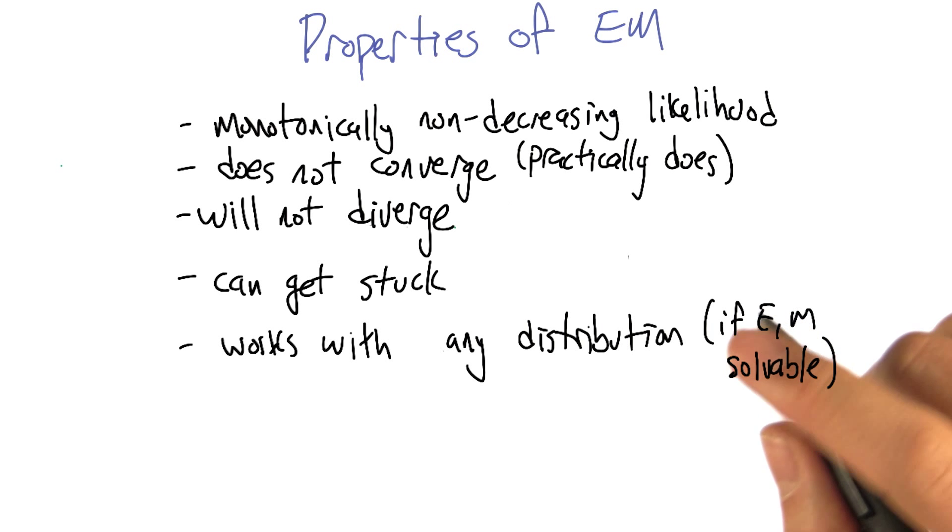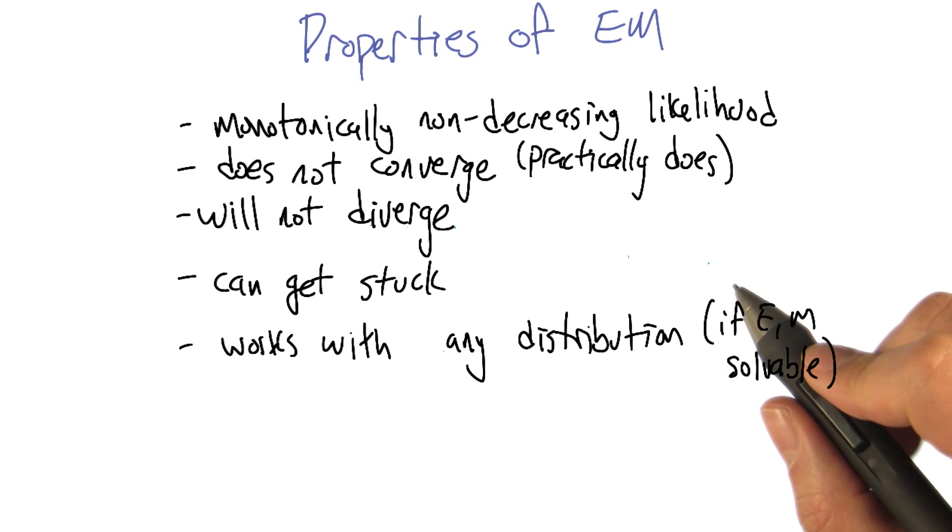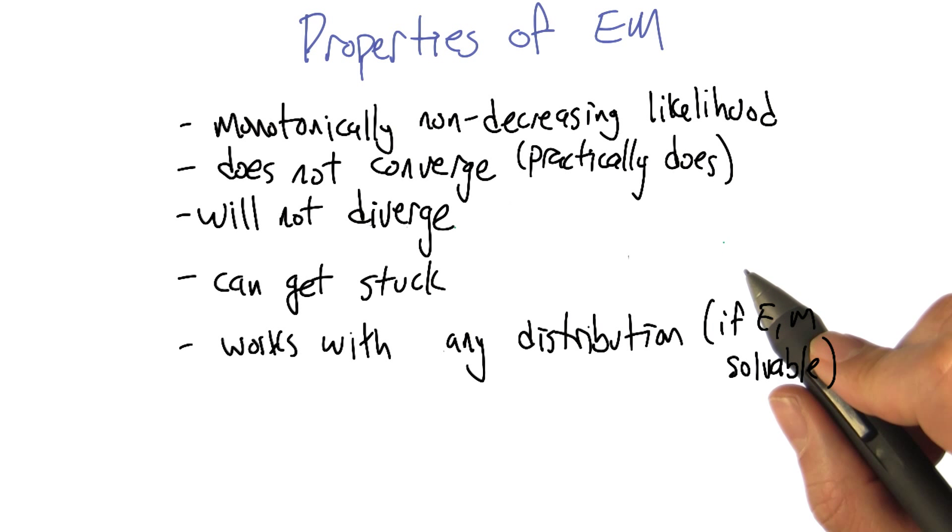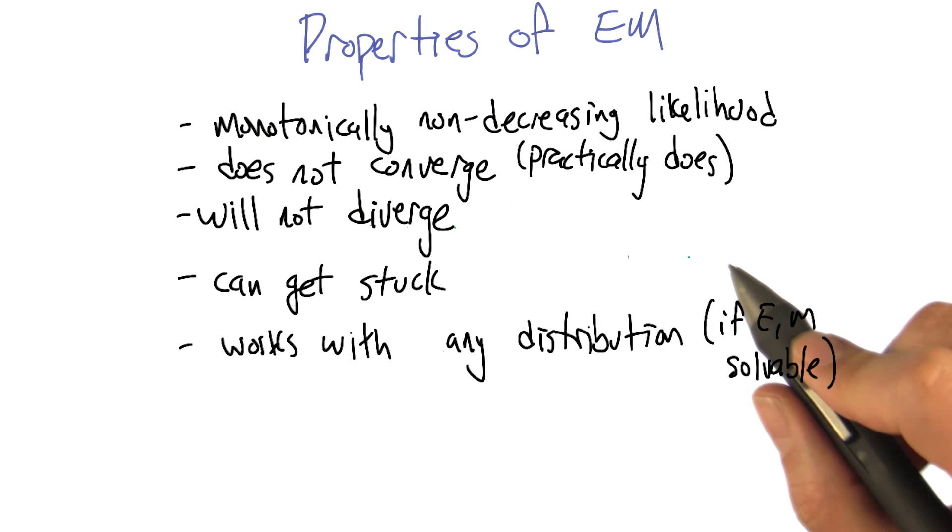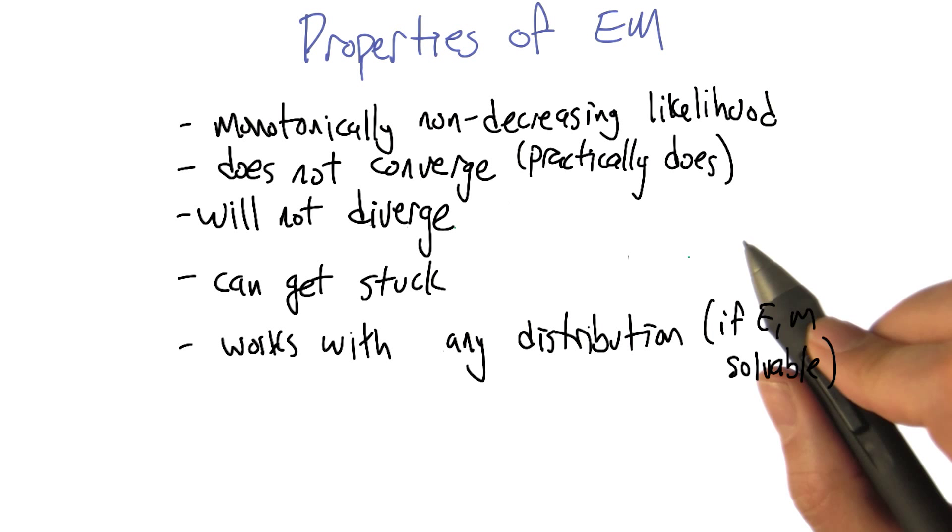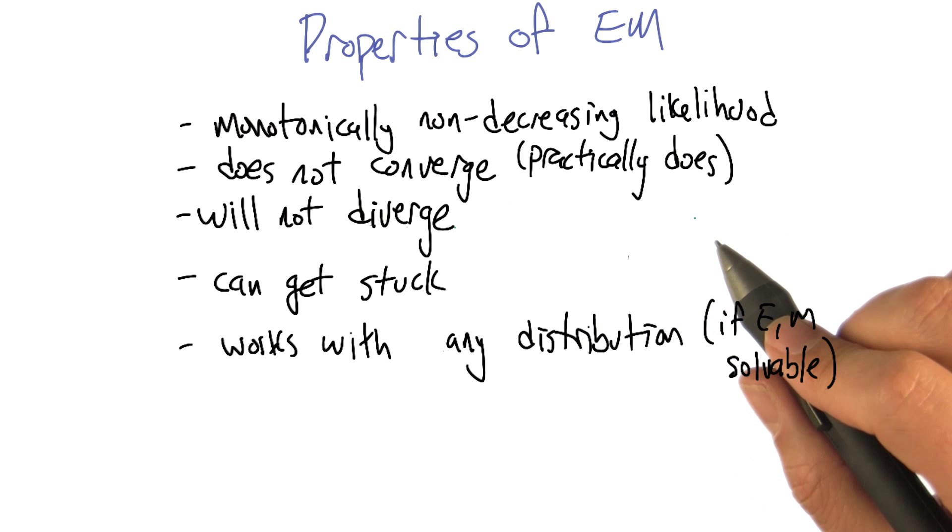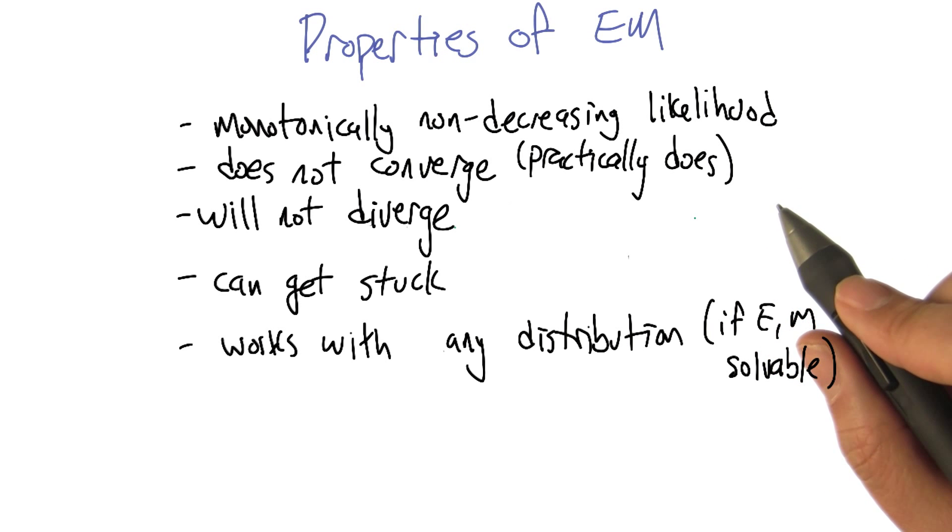We talked about the equations that define expectation maximization and stepped through an example with some actual data, in the sense that it was data points, though they weren't actual measured data points. But what I'd like to talk about now is some of the properties of the EM algorithm more generally.